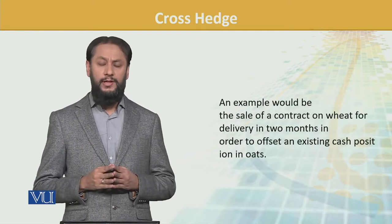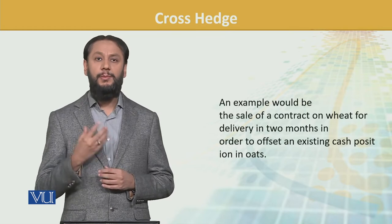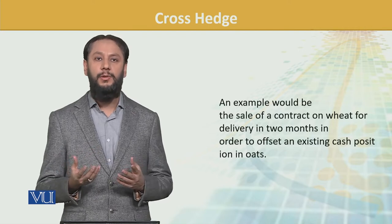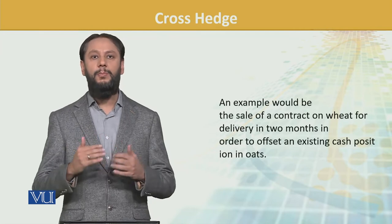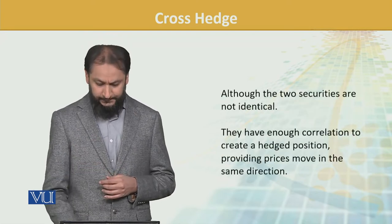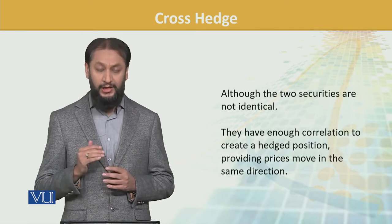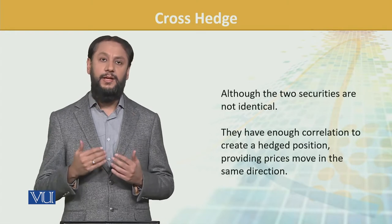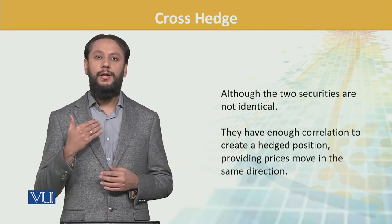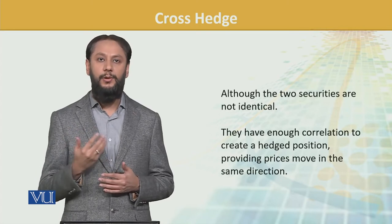An example would be the sale of a contract of wheat for delivery in two months in order to offset an existing cash position in oats. You have a cash position in oats but no derivative is available for oats, so you use wheat because they have a high level of correlation. Although the two securities are not identical, they have enough correlation to create a hedge position, providing price movement in the same direction.